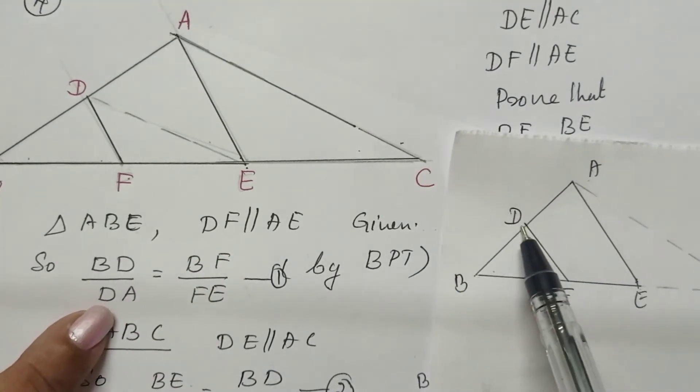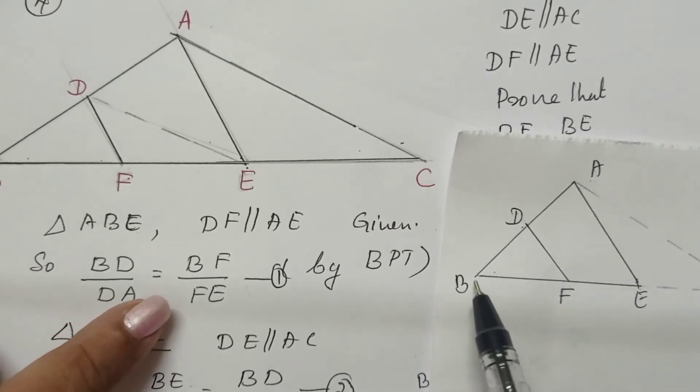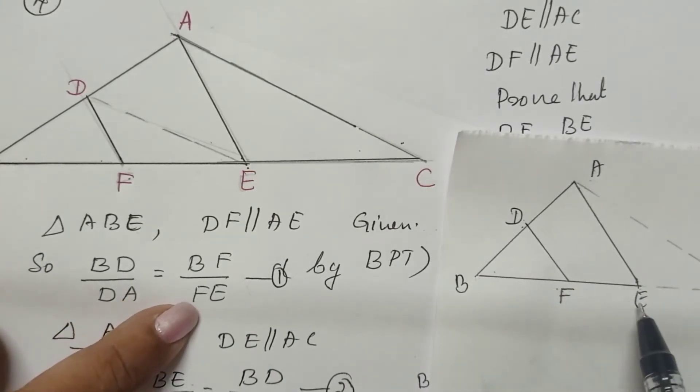Then we can say BD divided by DA equals BF divided by FE.